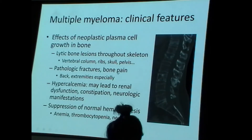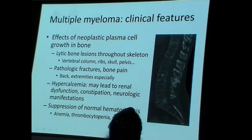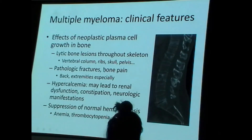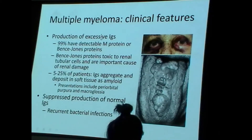Multiple myeloma is characterized by hypercalcemia — too much calcium in the blood — because the skeleton is a calcium reservoir. As the cancer grows in the bones, it spills calcium into the bloodstream. Normal bone marrow production is also impaired. There will be inadequate red blood cells, and the monoclonal immunoglobulin — the M-protein — can be assessed to monitor response to therapy.